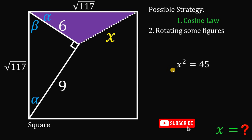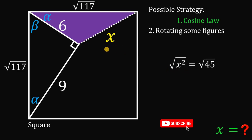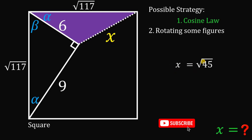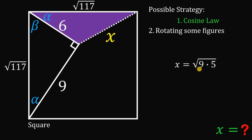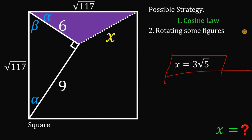To solve for x, we take the square root of both sides. Since x is a length, we take only the positive value. So x equals the square root of 45. Simplifying: 45 equals 9 times 5, and the square root of 9 is 3, giving us 3 times the square root of 5. That is the value of x using our first method — the cosine law.